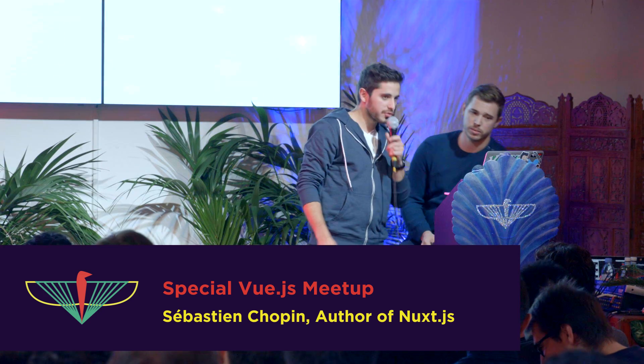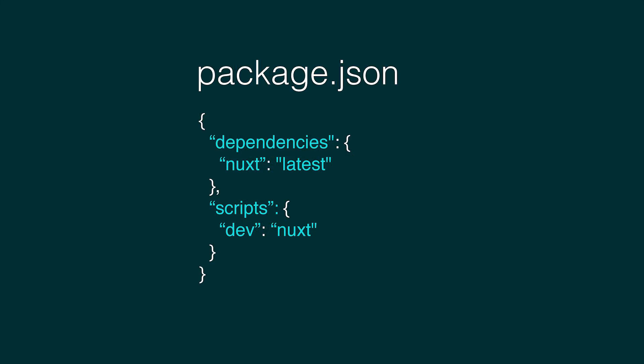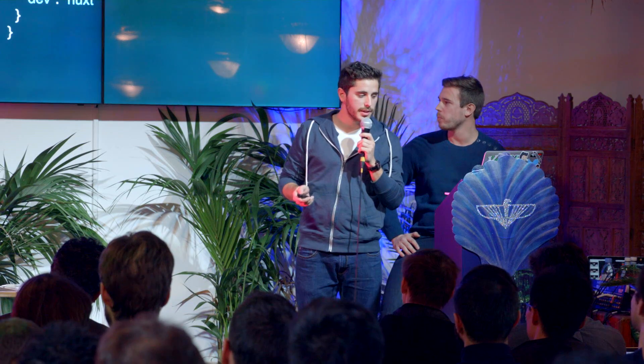Hi everyone, I'm Sebastian. I'm going to show you an example made with Nuxt.js using the slides. First, we need to install Nuxt with npm install. You need a package.json, but I think everyone here knows how it works. That's the minimum we need to start working with Nuxt. We install it and add a script called dev which just launches Nuxt. You don't have to install it globally — when you run npm run dev, it will find Nuxt in the node_modules directory and launch it.